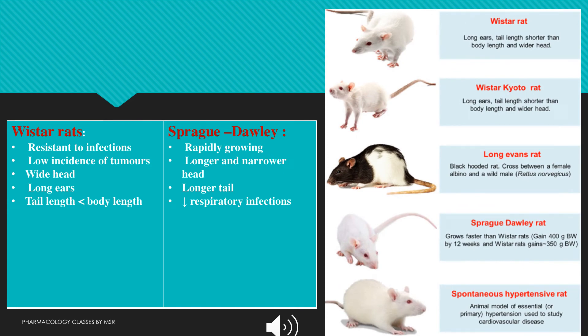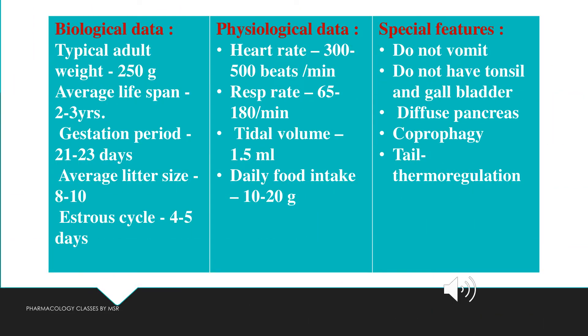Wistar rats are resistant to infections, have a low incidence of tumors, a wide head, long ears, and a tail length less than body length. Sprague-Dawley rats have a longer and narrower head, longer tail, are rapidly growing, and are less prone to respiratory infections. Other rat types include Long-Evans rats and spontaneously hypertensive rats.